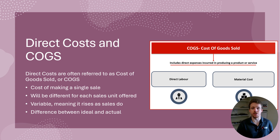We discussed sales units earlier, and COGS will be different for each one. To use the restaurant example again, each recipe will require different ingredients and therefore carry different COGS. COGS in direct sales tend to be variable, meaning they rise alongside sales rather than remaining flat and fixed regardless of them. There also tends to be a discrepancy between ideal and actual COGS — it's almost always higher than it should be on paper due to wastage and human error. For this reason, it's important to budget a little extra for each COGS calculation when crunching numbers, and to regularly compare ideals versus actuals to ensure the difference isn't major or growing.